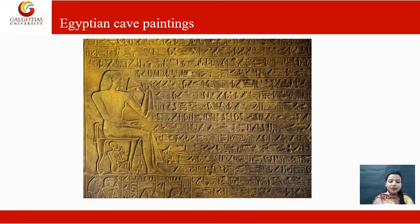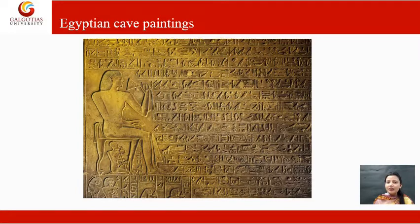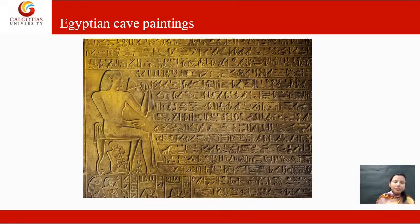Moving on to Egyptian cave painting — as you see, this is an example. Ancient Egyptian art refers to art produced in ancient Egypt between the 31st century BC and the 4th century AD. It includes painting, sculptures, drawing on panels, jewelry, ivories, architecture, and other art media. The art style changed very little over time. Much of the surviving art comes from tombs and monuments, giving insight into ancient Egyptian afterlife beliefs. Drawing started from prehistoric times, and this is one example of Egyptian cave painting.